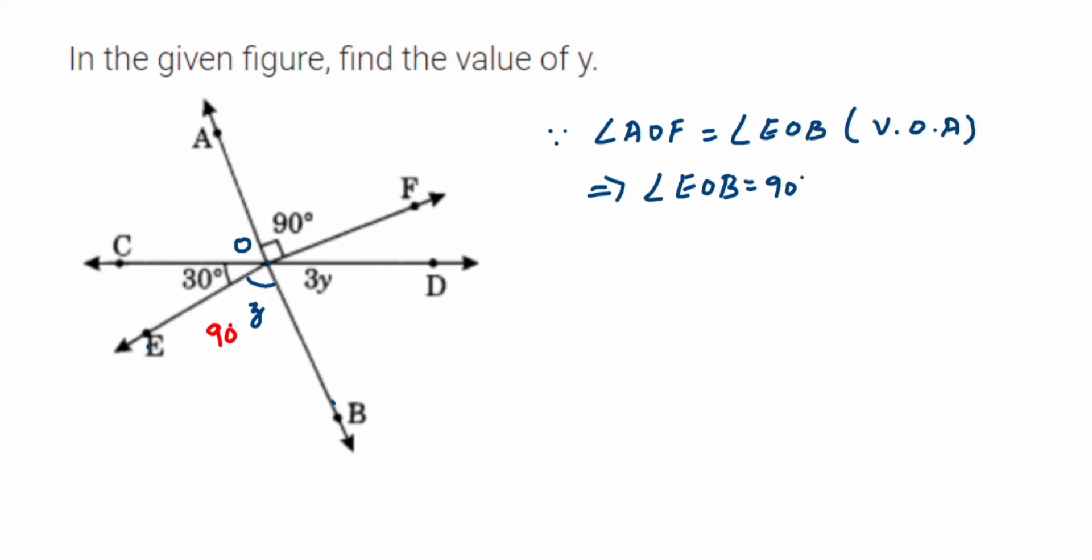Whenever angles are lying on a straight line, the sum of all those angles will be equal to 180 degrees. So if I add this 30, 90, and 3y, it will be equal to 180 degrees. This complete line will always be 180 degrees.